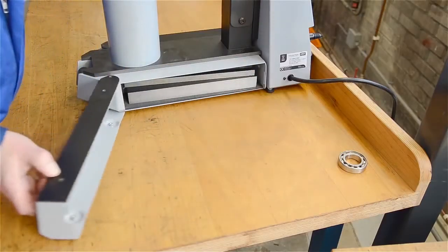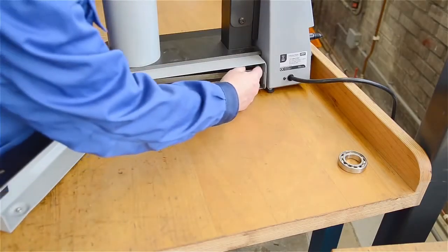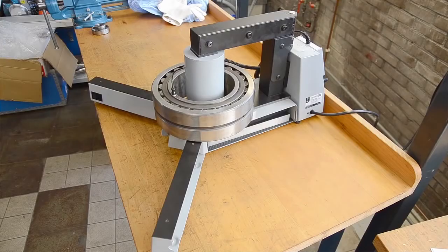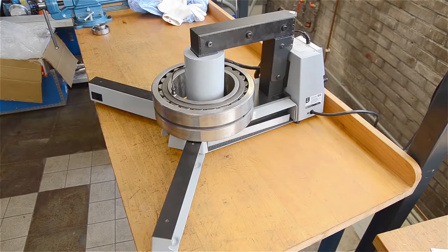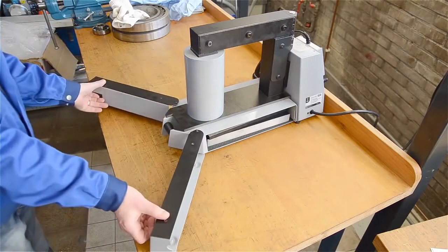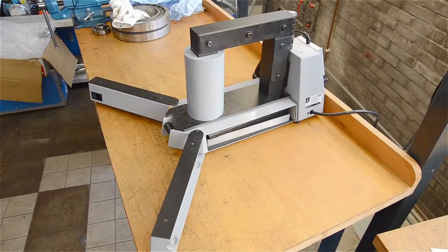Choose the appropriate yoke for the bearing to be heated and place the bearing on the yoke. Better still, if there is space around the coil, place the bearing here for even higher efficiency. SKF heaters have built-in adjustable support legs to make this option really easy.